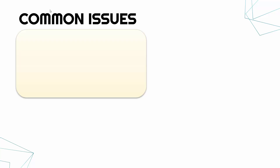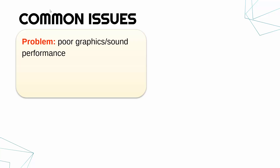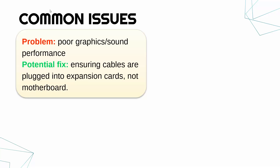A quite common problem is weirdly poor graphics or sound performance. You might have a really expensive graphics card but the quality is bad or a game is really laggy and you're not sure why. This can sometimes be caused by not plugging into the correct port. For example, plugging a monitor cable into the motherboard instead of into the expensive graphics card. In a desktop computer there are lots of ports — you've got to make sure the cable goes into the correct one, in particular your expansion card and not your motherboard.